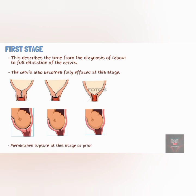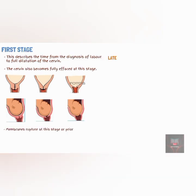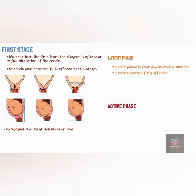The first stage of labor can be further subdivided into two phases: the latent phase and the active phase. The latent phase is the time of cervical dilation from 0 cm to 4 cm. The cervix also becomes fully effaced during the latent phase of the first stage of labor. It usually lasts for 6 to 8 hours, although it may last up to 24 hours.